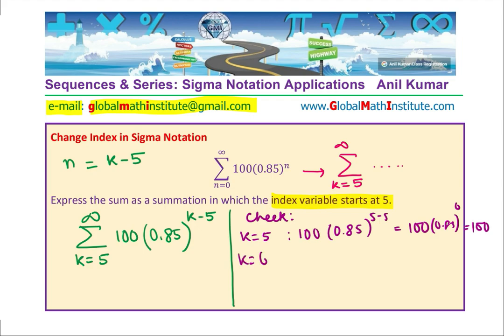And now, if k equals to 6, then we have the term as 100, 0.85, 6 minus 5. Which is 100 into 0.85. So, which is equal to 85. You see, exactly same as this particular series. So, they are exactly same.